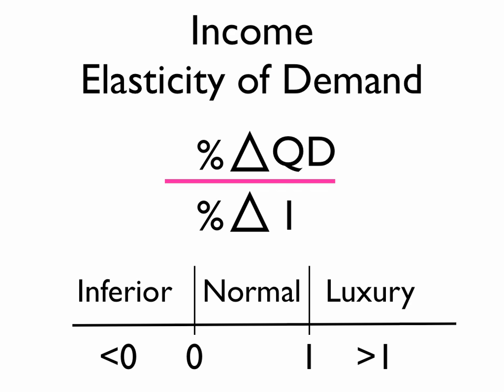Let's just review income elasticity of demand. The equation is percentage change in quantity demanded divided by percentage change in income. If that value is less than 0, we consider that good an inferior good. If it falls between 0 and 1, it's a normal good. And if it's larger than 1, it's considered a luxury good.